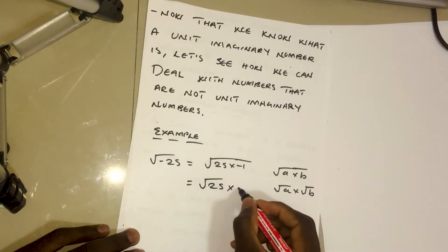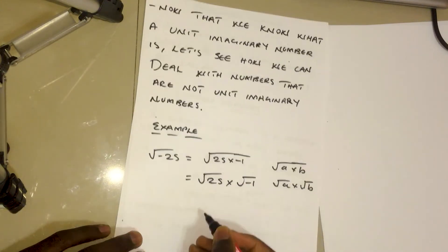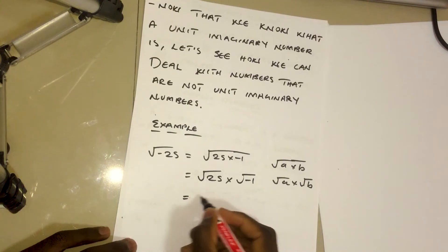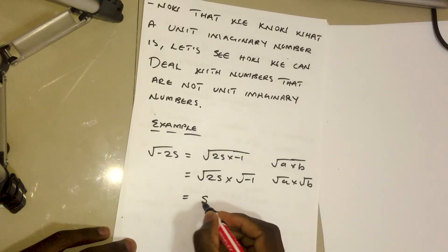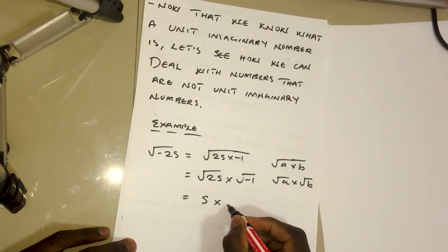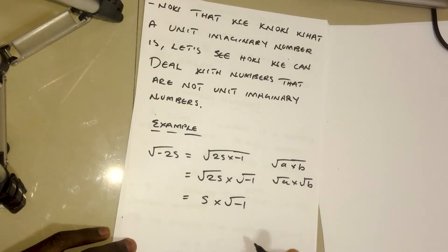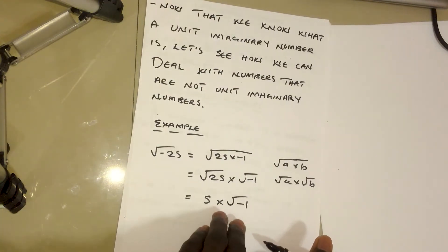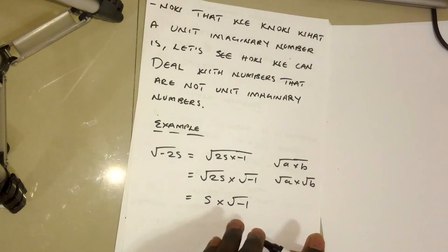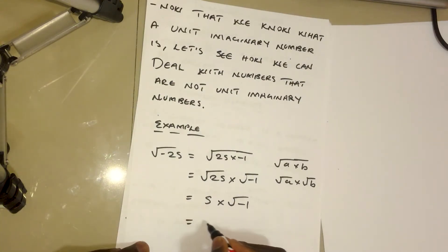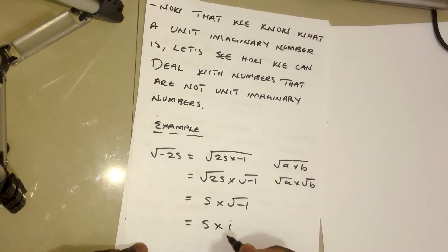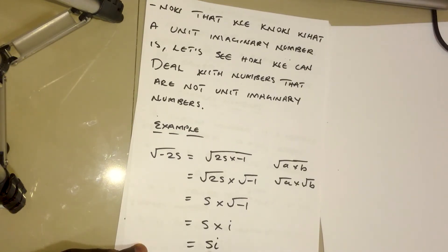So we get the square root of 25 times the square root of negative 1. The square root of 25 is simply 5, and the square root of negative 1 is i. So we have 5 times i, which is simply 5i — and that's our final answer.